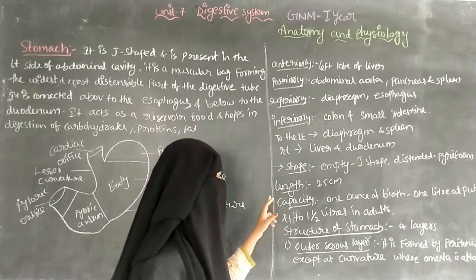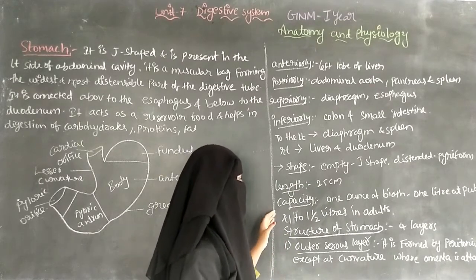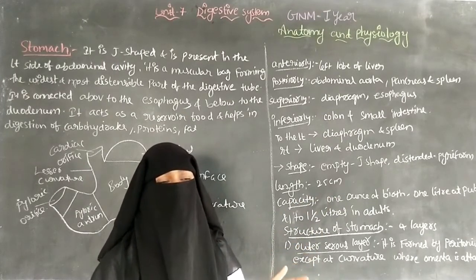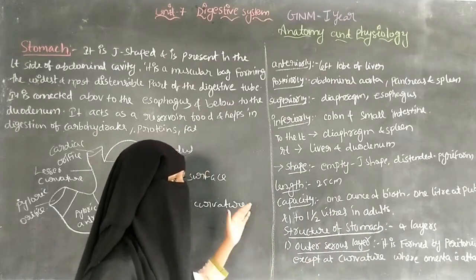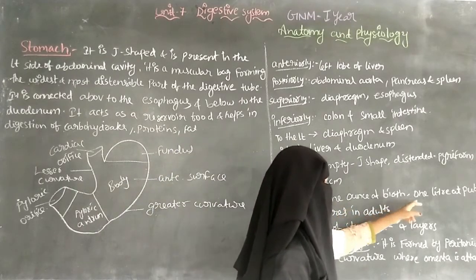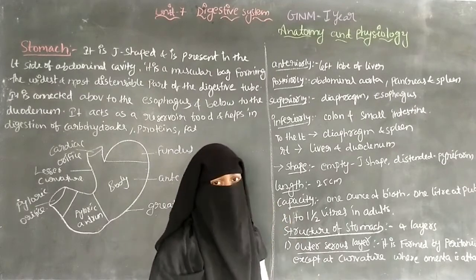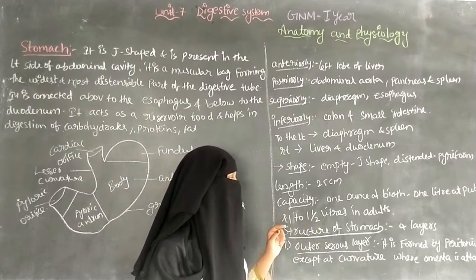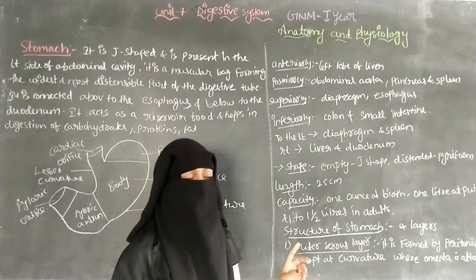The length of the stomach when well distended is 25 centimeters. The capacity of the stomach is one ounce at birth, which is approximately 29.5 to 30 grams. At puberty, around 12 to 13 years of age, the capacity is one liter. In adults, the capacity is one to one and a half liters.